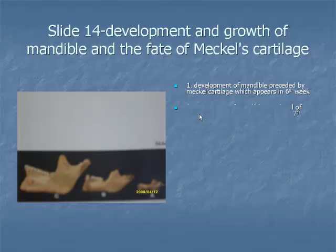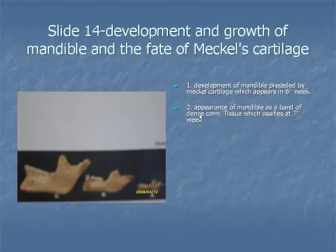Item 2: The body of the mandible first appears as a band of dense connective tissue on the anterolateral aspect of the cartilage. During the seventh week of intrauterine life, a center of ossification appears at a site corresponding to the future mental foramen. That is why the mandible is said to develop by intramembranous ossification. From this center, bone formation spreads rapidly forward, backward, and upward around the inferior alveolar nerve and its terminal branches.